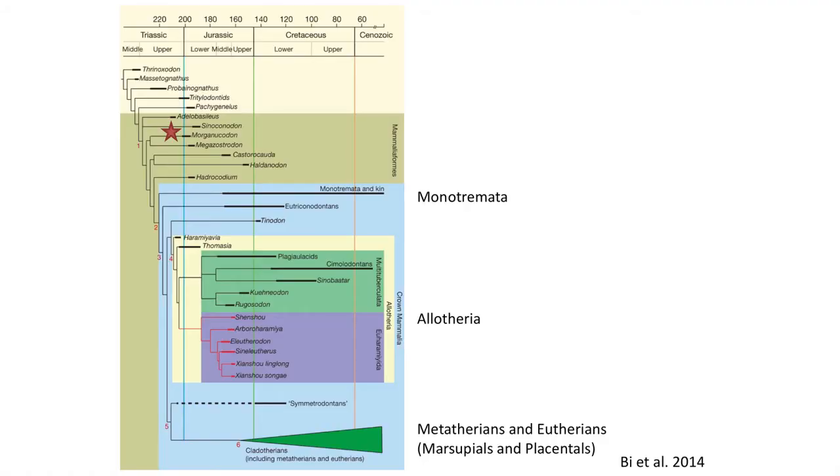In the previous lecture we had discussed the anatomy of the first true mammal, Morganucodon, from the early Jurassic, as well as its close relative, the non-mammal, Psyconodon. During the late Triassic and early Jurassic we began to see the rise of the three major groups of Mesozoic mammals.